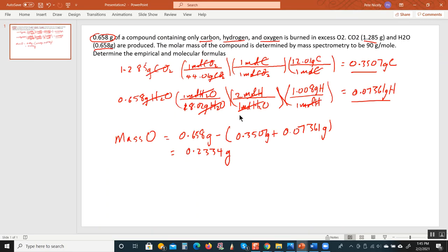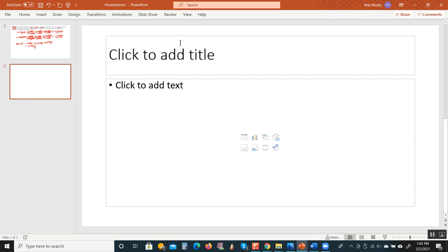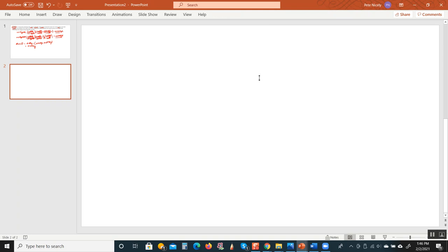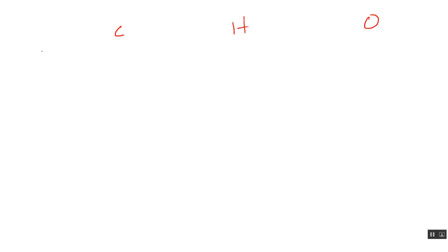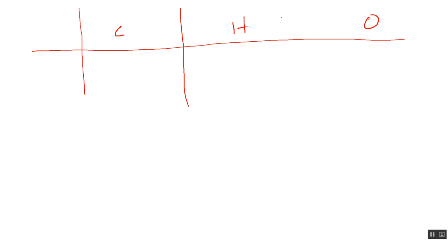Now that we've determined the masses of all three elements, the next step is to set up a table so we can eventually get the empirical formula. The columns are carbon, hydrogen, and oxygen. The masses are: carbon = 0.3507 g, hydrogen = 0.07361 g, and oxygen = 0.2334 g.